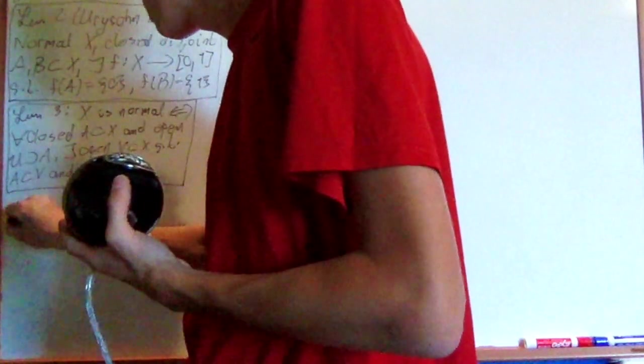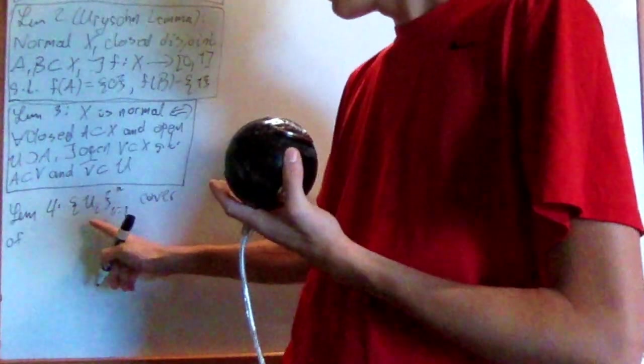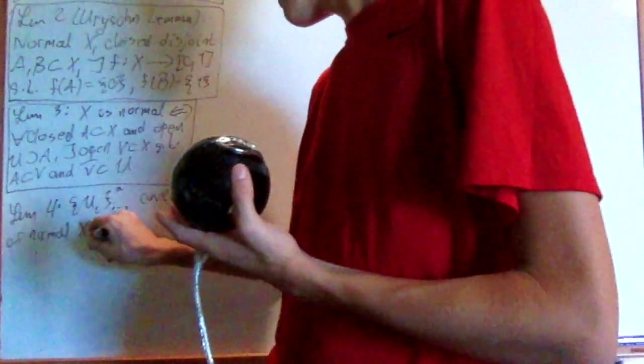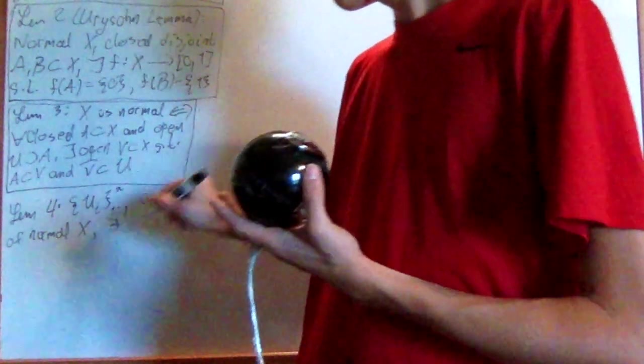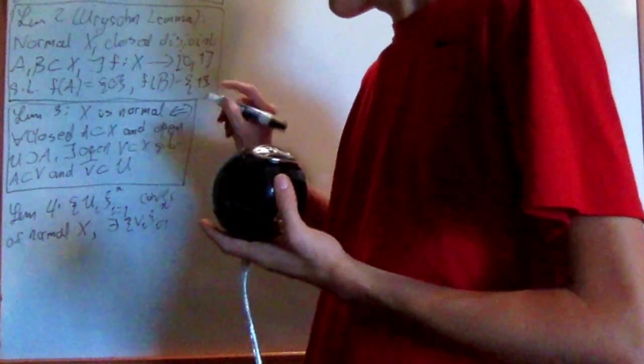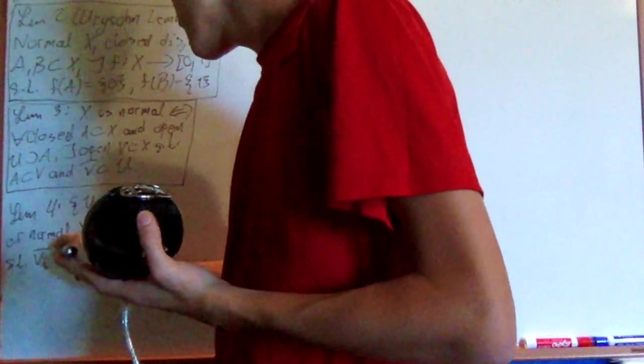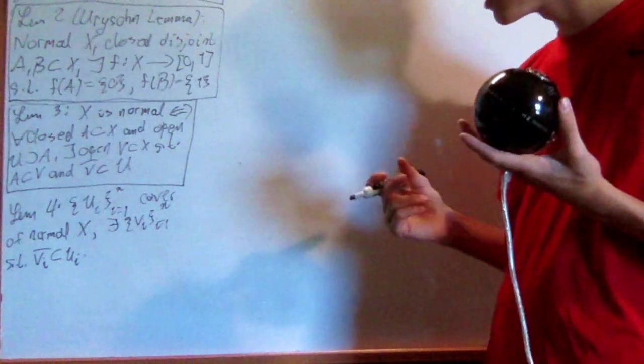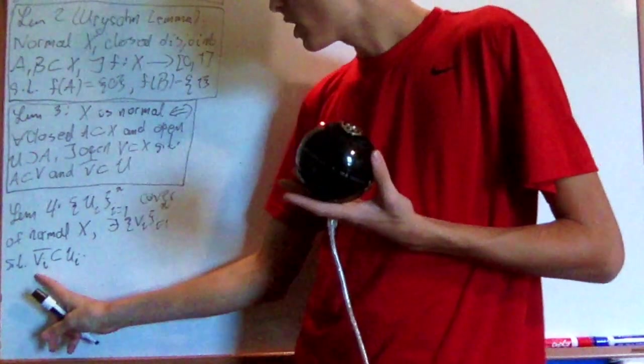Now I'm also going to use one more important lemma, although it isn't nearly as important as these other two. This other lemma, which I'll call just lemma four, basically just says that if I'm given a finite cover, if given a finite open cover of some normal space x, then there exists a new cover, which I'll call v i, for i equals one to n, such that v i bar is a subset of u i.